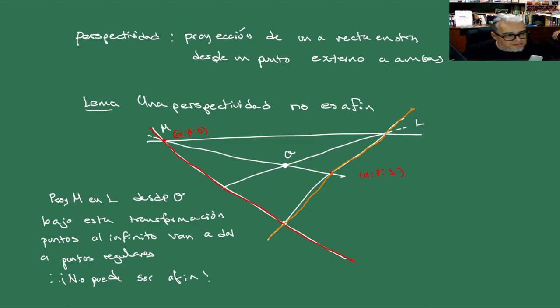So a perspectivity is not affine. What we're going to show in the next session is that a perspectivity is a projective transformation. We'll construct its associated matrix, and with that we'll show that the affine group is a subgroup of the projective group, and that the projective group is in that sense the largest of the geometries we'll be seeing. Well, for today we'll stop here and see you in the next session.